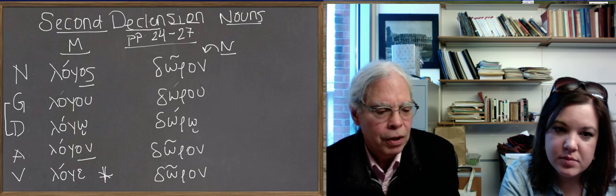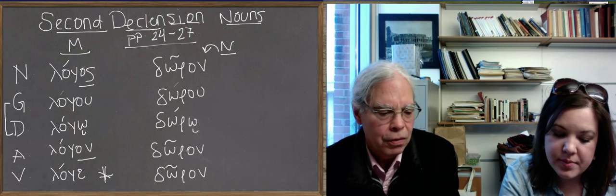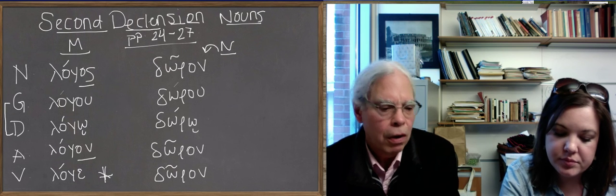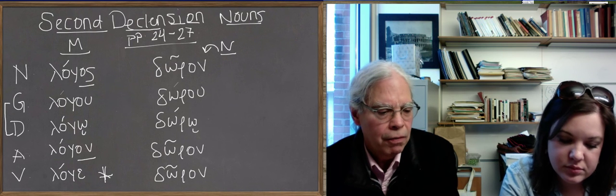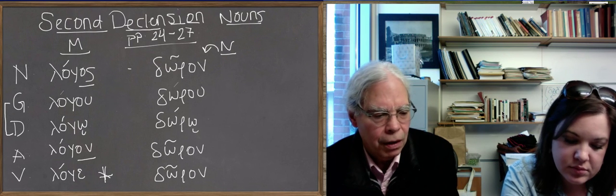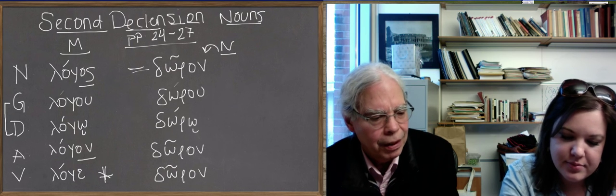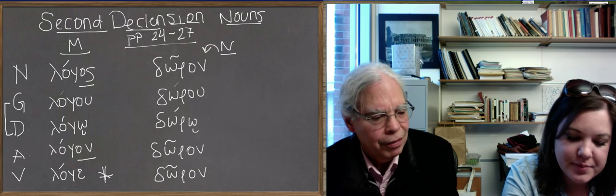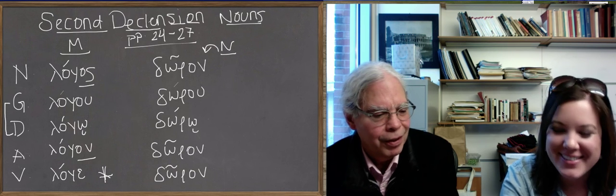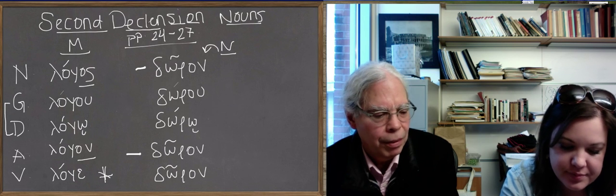So let's look at the forms of doron quickly. The important thing is, and this is true of all neuter nouns in Greek, not just second declension neuter nouns, the nominative and the accusative of them are identical. Doron and doron are both nominative and accusative.